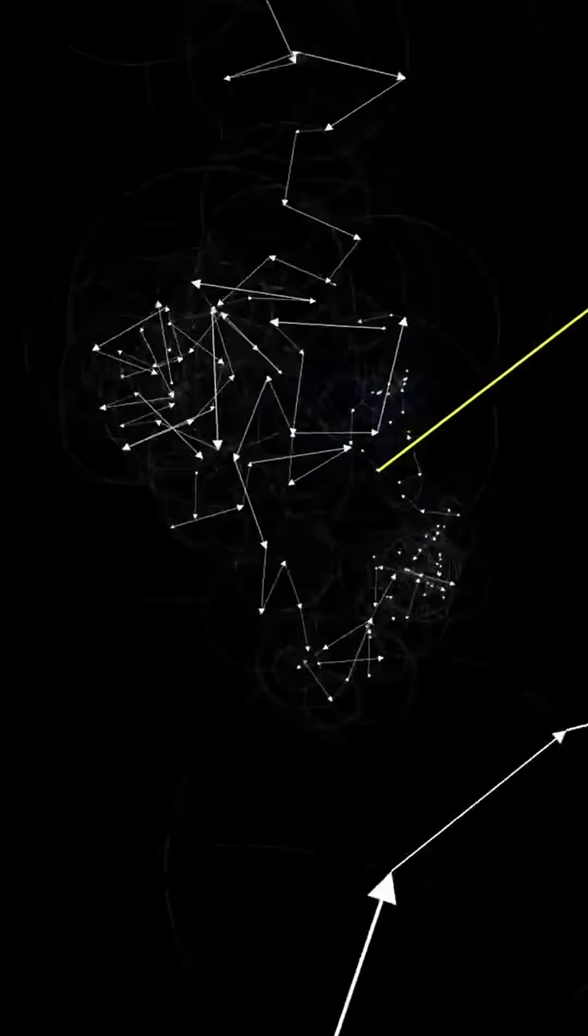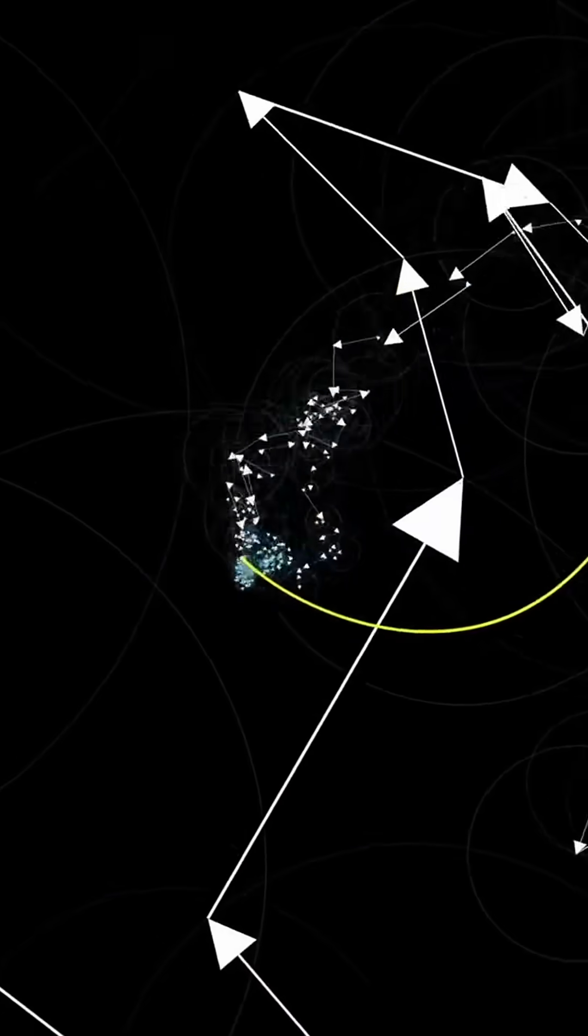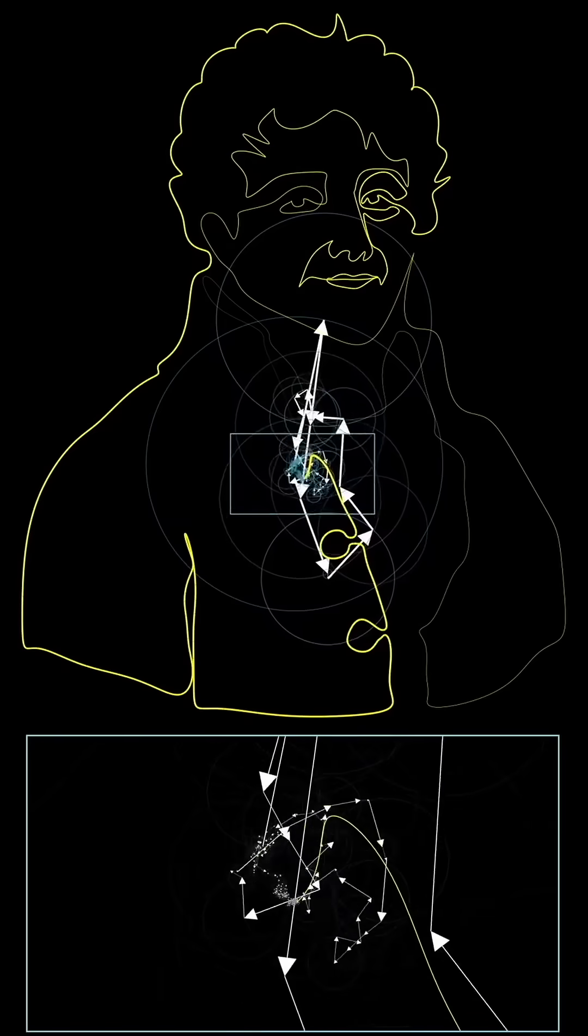When you consider the chaotic frenzy that you're looking at, and the clockwork rigidity underlying all the motions, it's bizarre how the swarm acts with a kind of coordination to trace out some very specific shape.